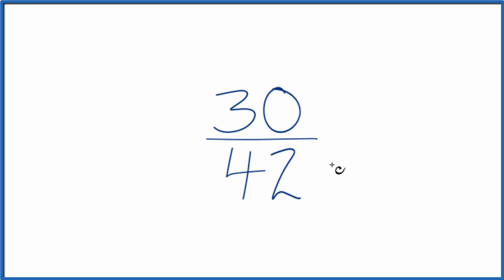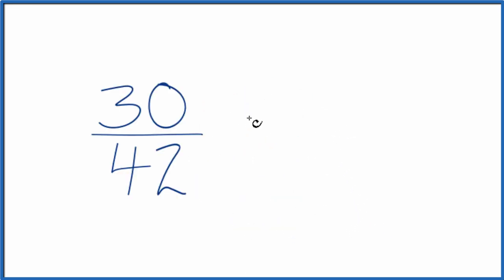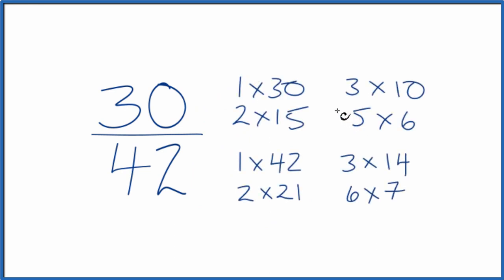So we need to find a common factor, something that goes into 30 and 42 evenly. Here are the factors for 30 and 42.